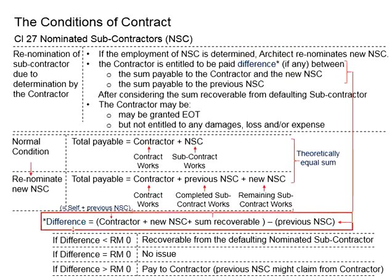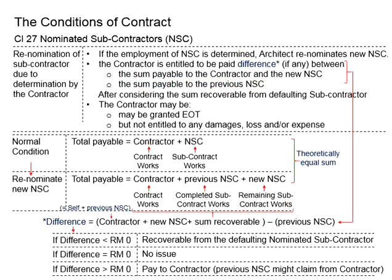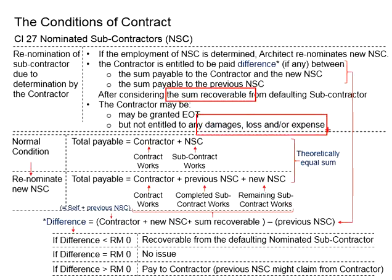To better imagine this, you can look at these equations. We are talking about the total sum payable to the contractor and the new nominated subcontractor, against the total sum payable to the previous nominated subcontractor. And then there will be a sum recoverable from the defaulting subcontractor, which shall be used for rectification in case of any damage and losses incurred due to the defaulted nominated subcontractor.